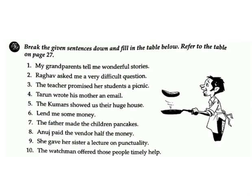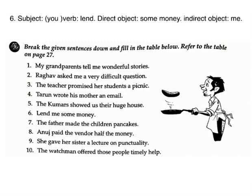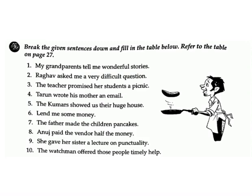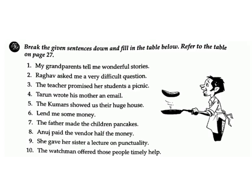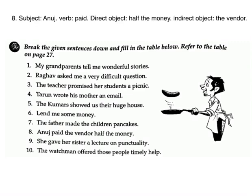6. Lend me some money. Answer — subject: you; verb: lend; direct object: some money; indirect object: me. 7. The father made the children pancakes. Answer — subject: the father; verb: made; direct object: pancakes; indirect object: children. 8. Anuj paid the vendor half the money. Answer — subject: Anuj; verb: paid; direct object: half the money; indirect object: the vendor.